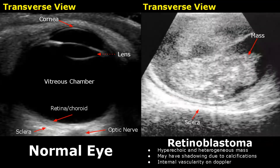Retinoblastoma is a malignancy of the retina. A hyperechoic and heterogeneous mass is present in the vitreous chamber. If it has large calcifications, posterior shadowing will be seen, and internal vascularity will be present on Doppler.